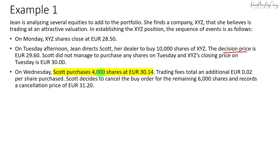On Wednesday, Scott purchases 4,000 shares at 30.14 euros, and trading fees total an additional 2 cents per share purchased. Scott then decides to cancel the buy order for the remaining 6,000 shares and records a cancellation price of 31.20.